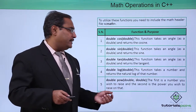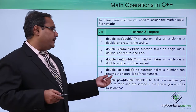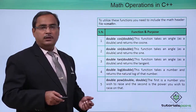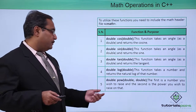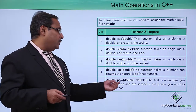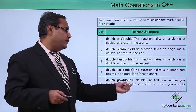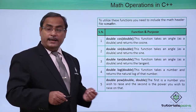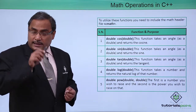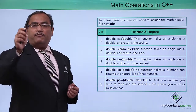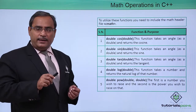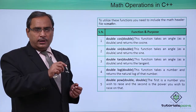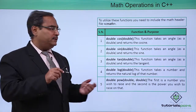There is a log function that takes a number and returns the natural log of that number. Then there is double pow(double x, double y), which calculates x to the power of y and returns the value as a double.